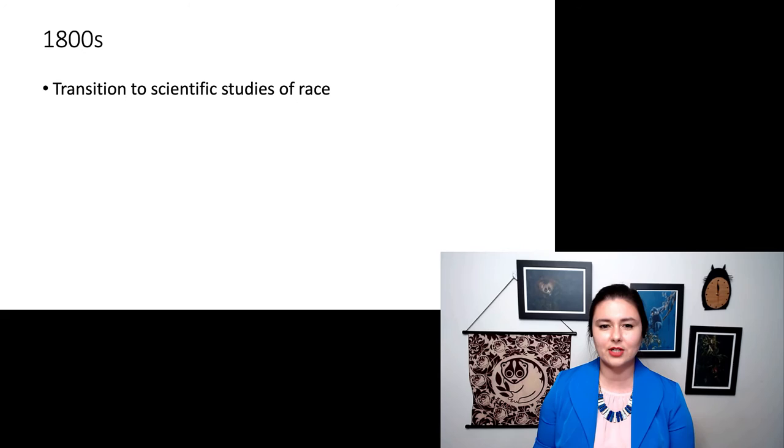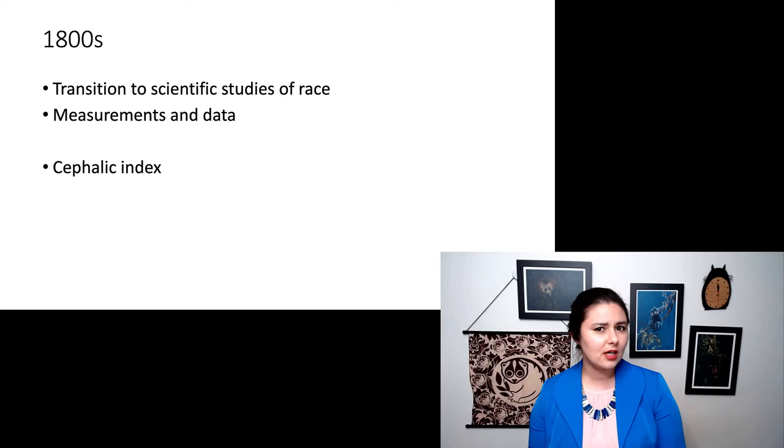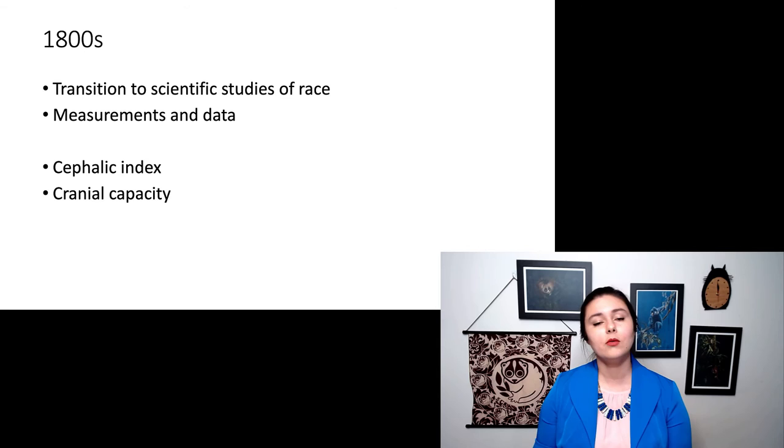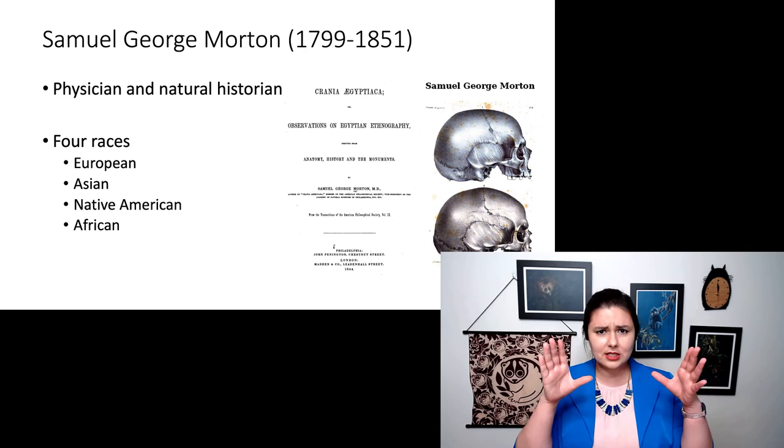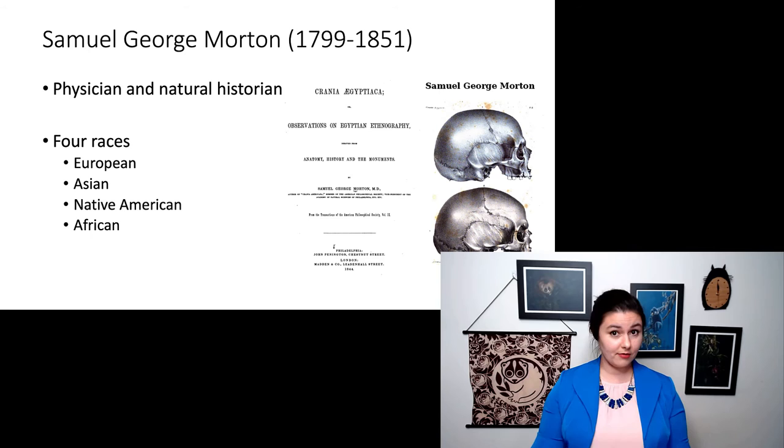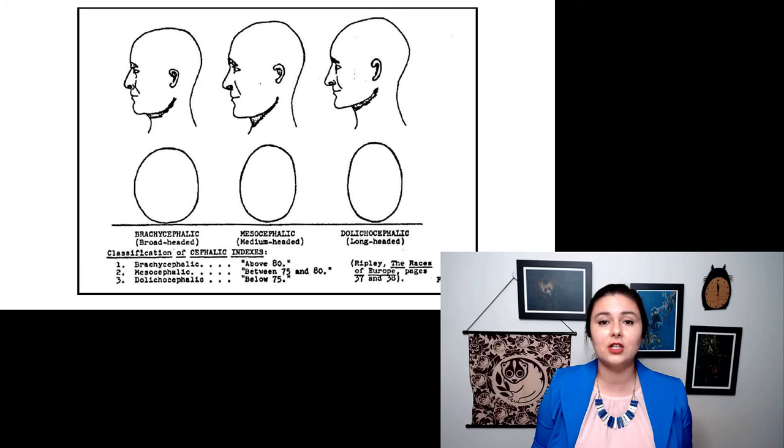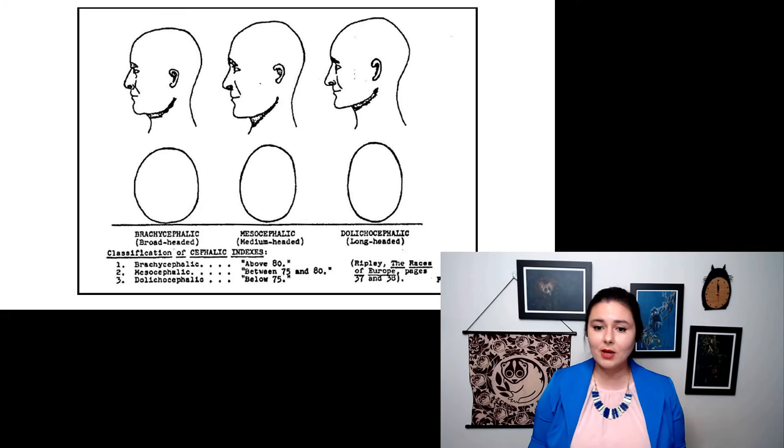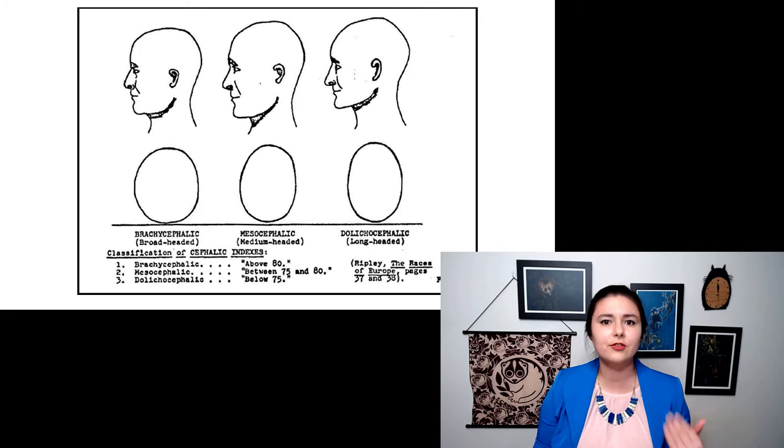In the 1800s we're seeing more and more of this transition to scientific studies for race, and people are trying to figure out what measurement, what number can I use to back up these different classifications. Two of the common things that were done were a cephalic index or looking at cranial capacity. The people who did this was Samuel George Morton. He was a physician and he really liked to look at crania. He named four different races because he's looking at different crania and making measurements: European, Asian, Native American, and African. Some of the ways you can classify the shapes of heads is you can look basically how wide are they, how long are they, how tall are they. And so you can create different categories here. So we have brachycephalic or broad-headed, mesocephalic or medium-headed, and dolichocephalic or long-headed. And for a while this was taken as, oh we can clearly classify different groups of people have a different shape to their heads.